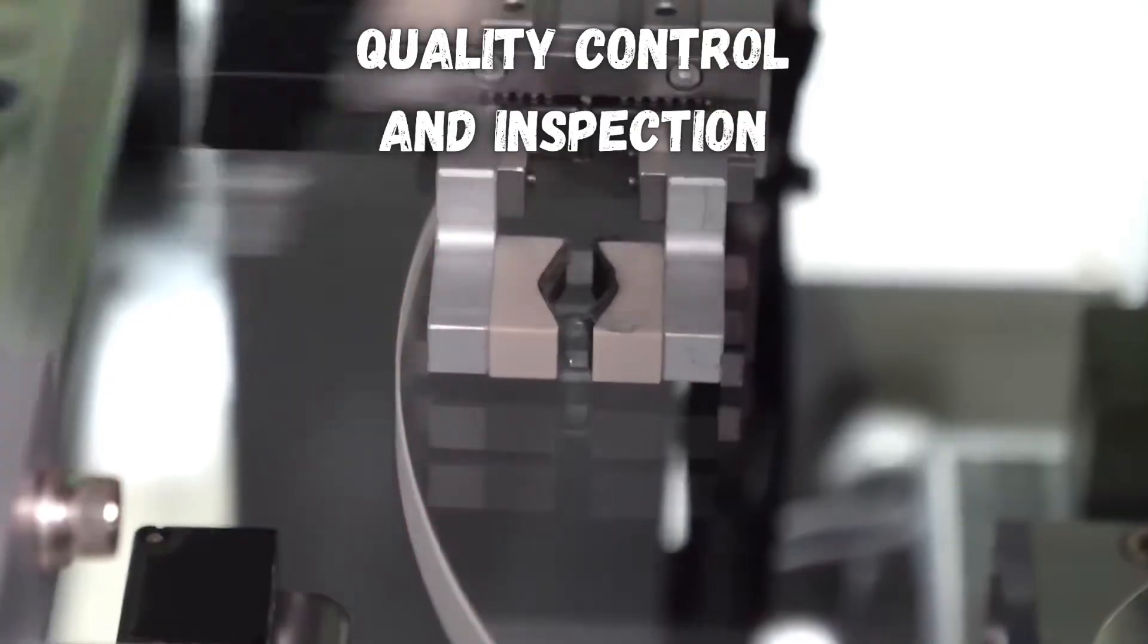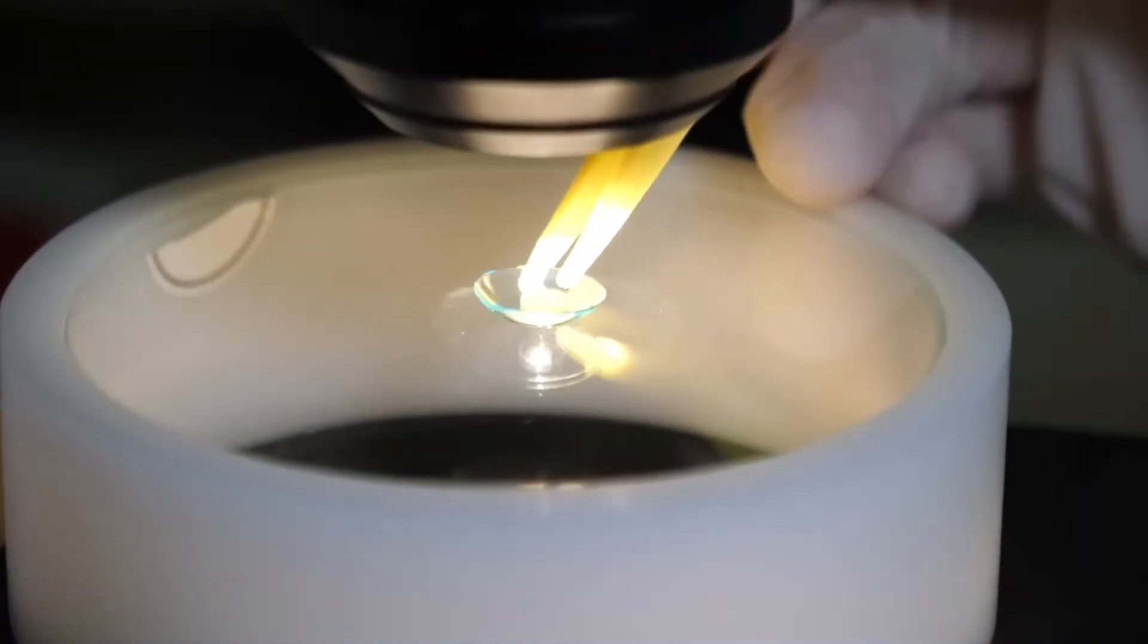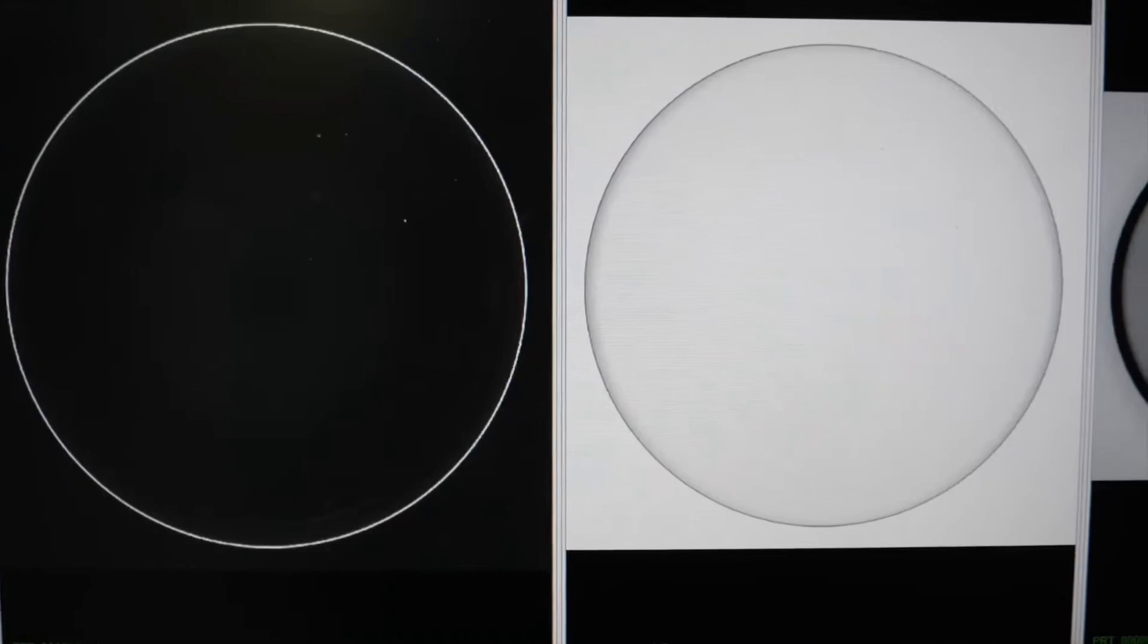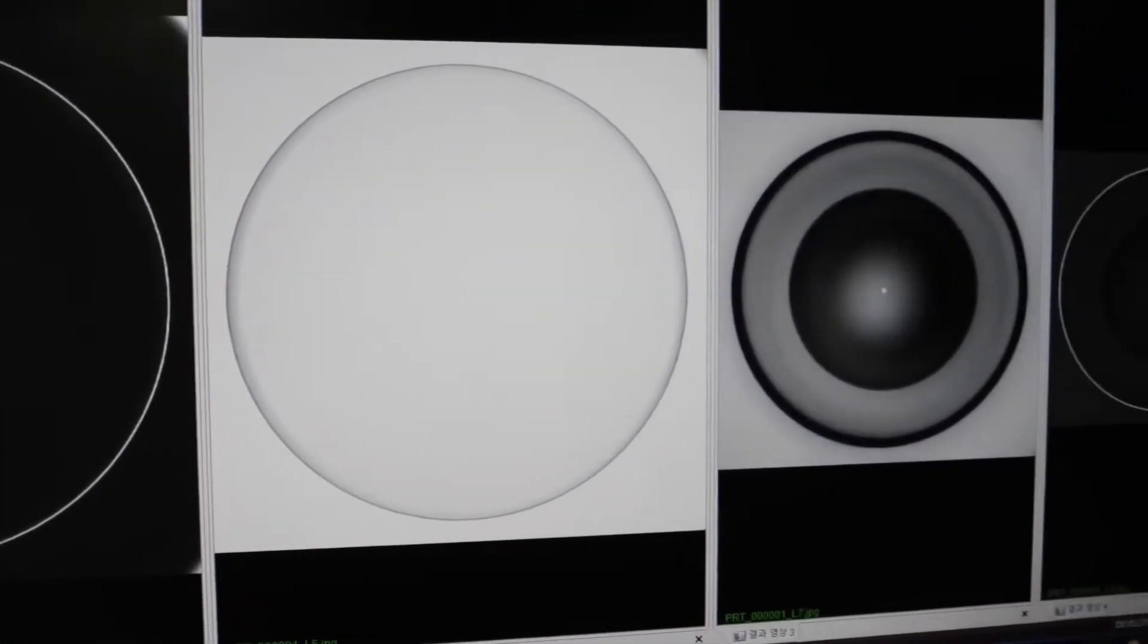The contacts then go through quality control, where microscopes are used to check for imperfections, like bubbles, tears, or uneven surfaces.